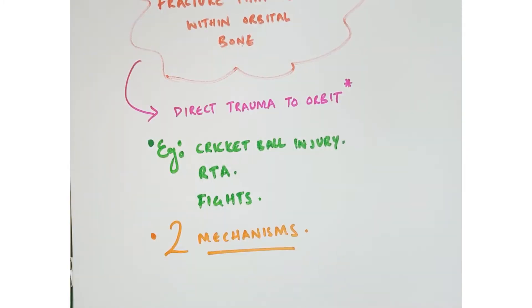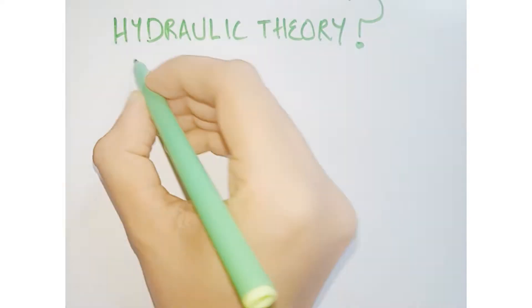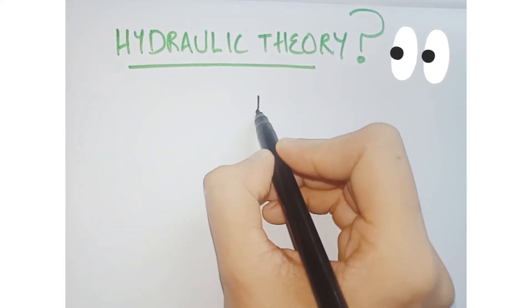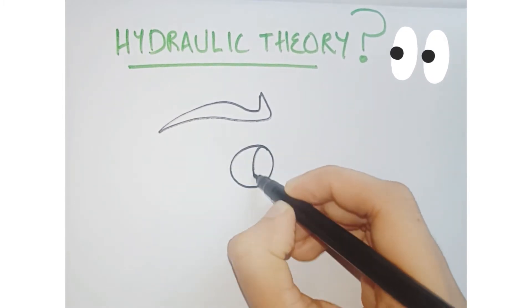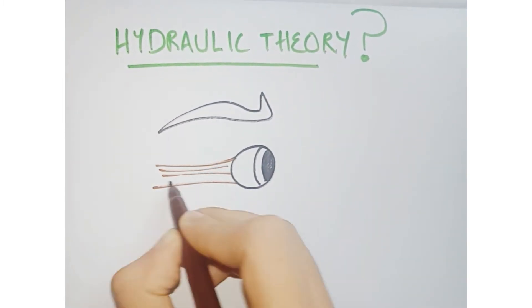Now there are two mechanisms for this fracture: hydraulic theory and buckling theory. Let's see what hydraulic theory tells us. First, draw the eye - you may all know how to draw an eye. This is one of your muscles attached to the eye.